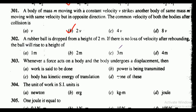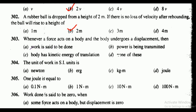Question 302: a rubber ball is dropped from a height of 2 meters. If there is no loss of velocity after rebounding, the ball will rise to a height of — the correct answer is 2 meters.